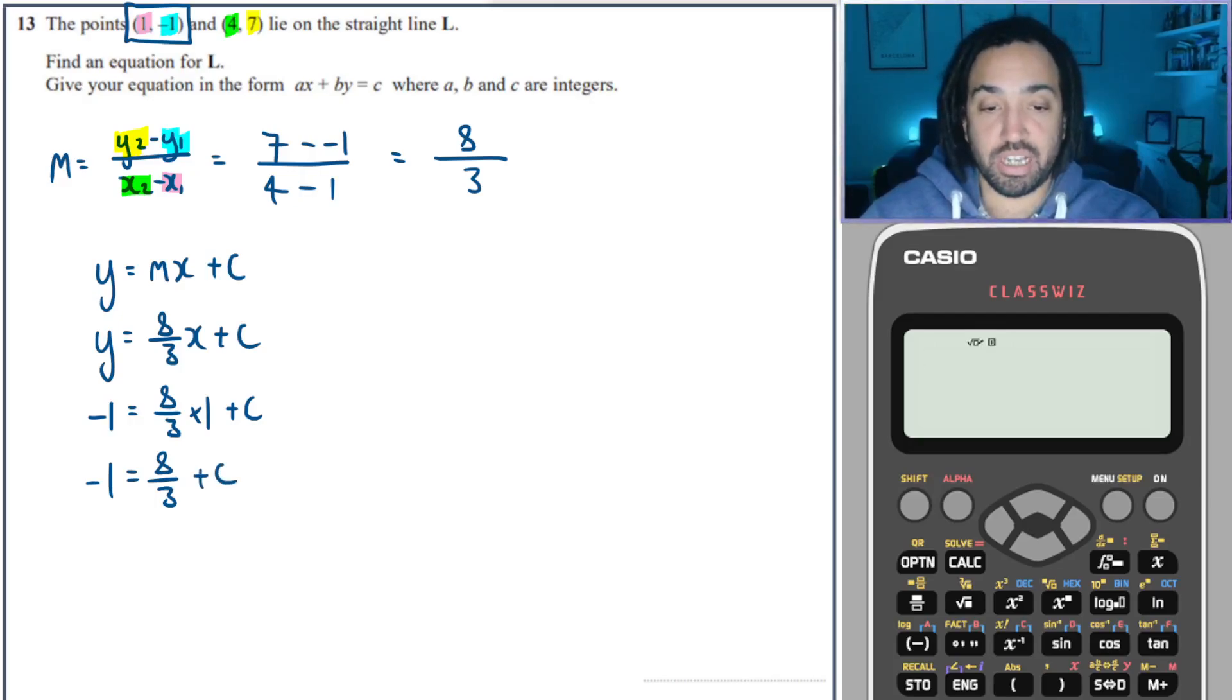So minus 1 is equal to 8 over 3 plus c. So to solve for c, I need to subtract 8 over 3 from minus 1. Now, I'd probably use my calculator to do this, just because I wouldn't want to make a mistake working with my fractions. So minus 1, then I take off the 8 over 3, and that gives me minus 11 over 3. Okay, so now I can write my equation in full. y is equal to mx, and then c is minus 11 over 3.